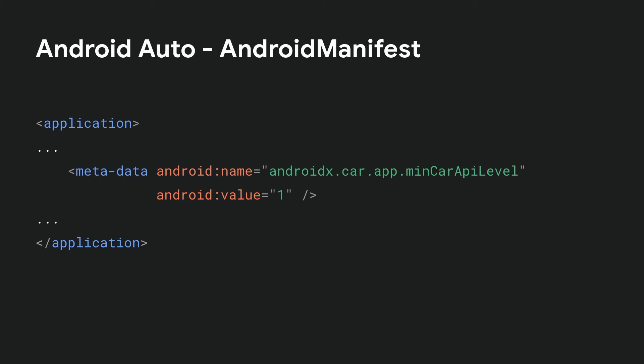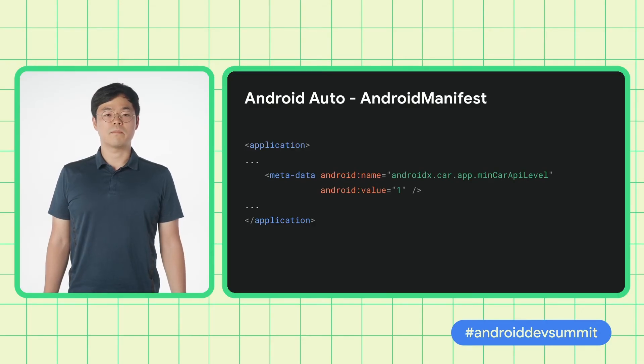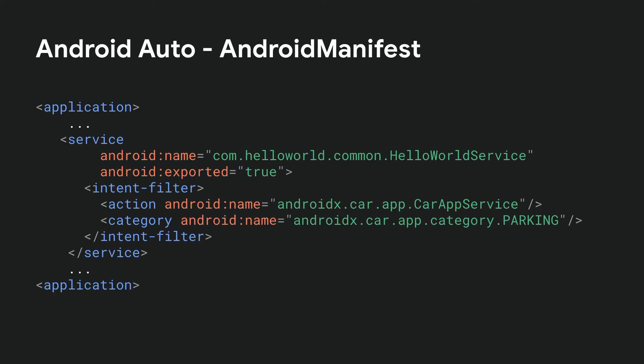When that happens, the host will display a message to update the host app. Since we are only using basic library features, we can leave it at one. Then, we declare our car app service in the application element. Notice that in the intent filter element, we declare our service as a car app service, and also our car app's category as a parking app. The category declared here will later be used in Play Store app review process to check if our app meets the category-specific car app quality guidelines.